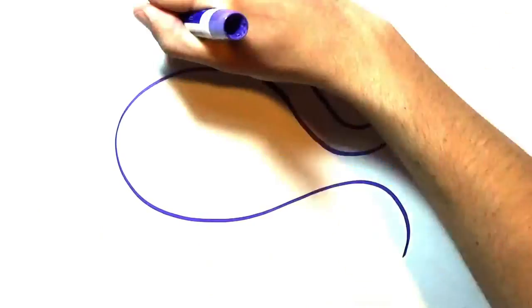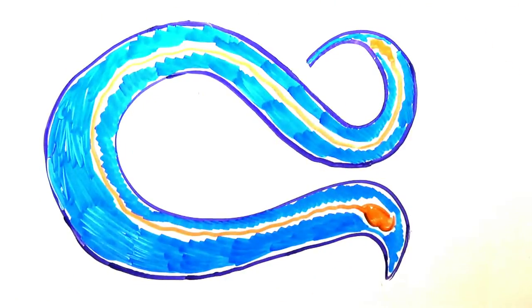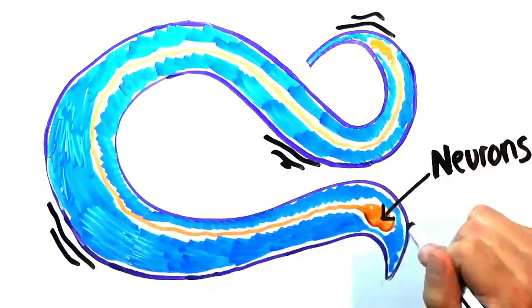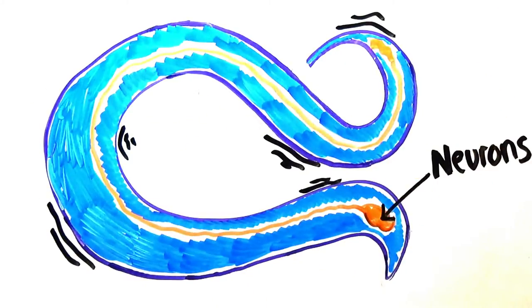However, just having neurons doesn't mean a life form will be intelligent. When Sidney Brenner was able to map out all the connective neuron pathways of the C. elegans worm for the 2002 Nobel Prize, it was found that most of the worm's 302 neurons were simply for sensation and movement.